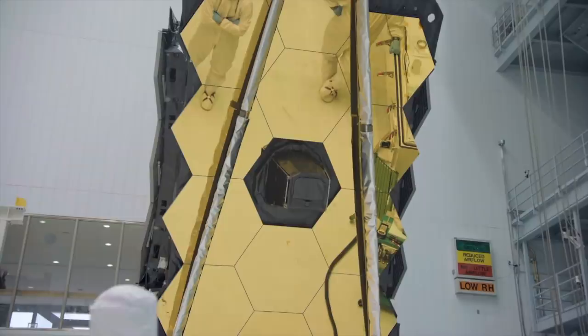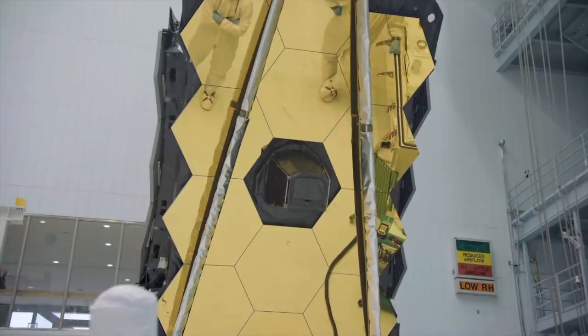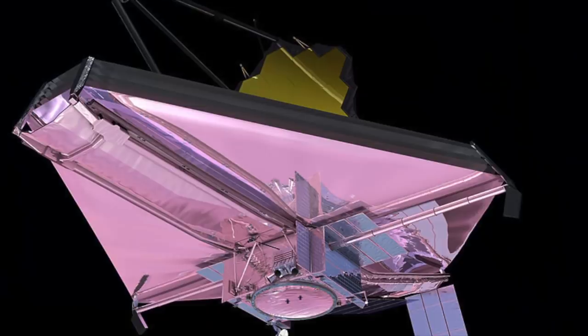But given that it's one of the unstable points, JWST must still expend fuel to stay in position, and also to counter the effects of radiation pressure from the sun. Remember JWST's sunshield has a lot of area, and thus acts as a light sail.